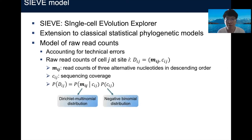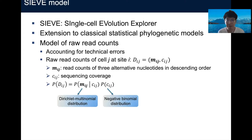SCIF also contains a model of raw read counts, which accounts for technical errors. The specific data input format is the raw read count of cell j at site i, namely D_ij. It includes M_ij and C_ij, where M_ij is a vector representing read counts of three alternative nucleotides in descending order of their values, and C_ij represents sequencing coverage. The probability of observing D_ij can be decomposed into two components: the probability of observing M_ij given C_ij follows a Dirichlet multinomial distribution, and the probability of observing C_ij follows a negative binomial distribution.